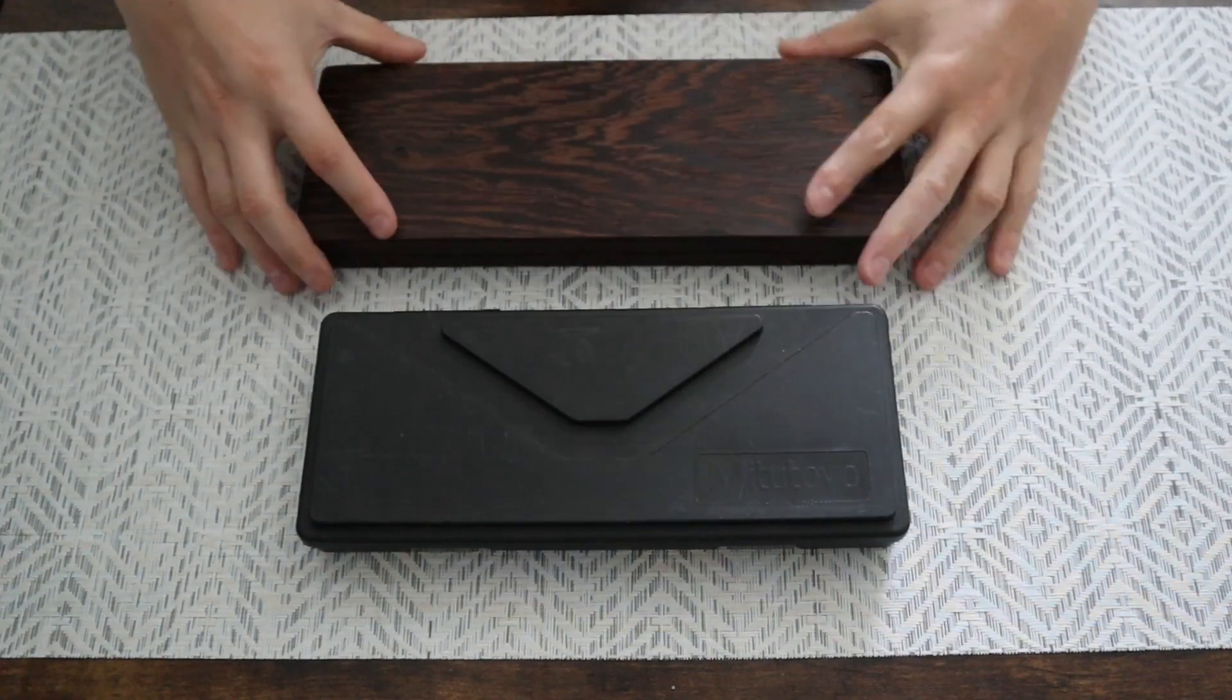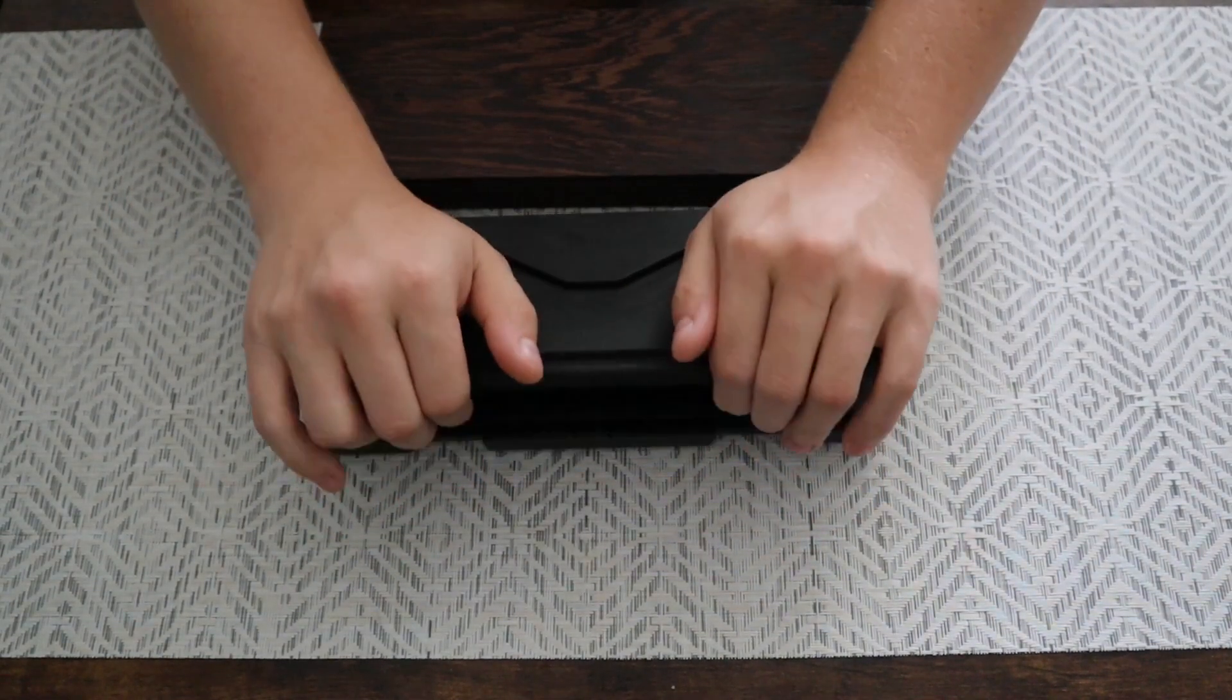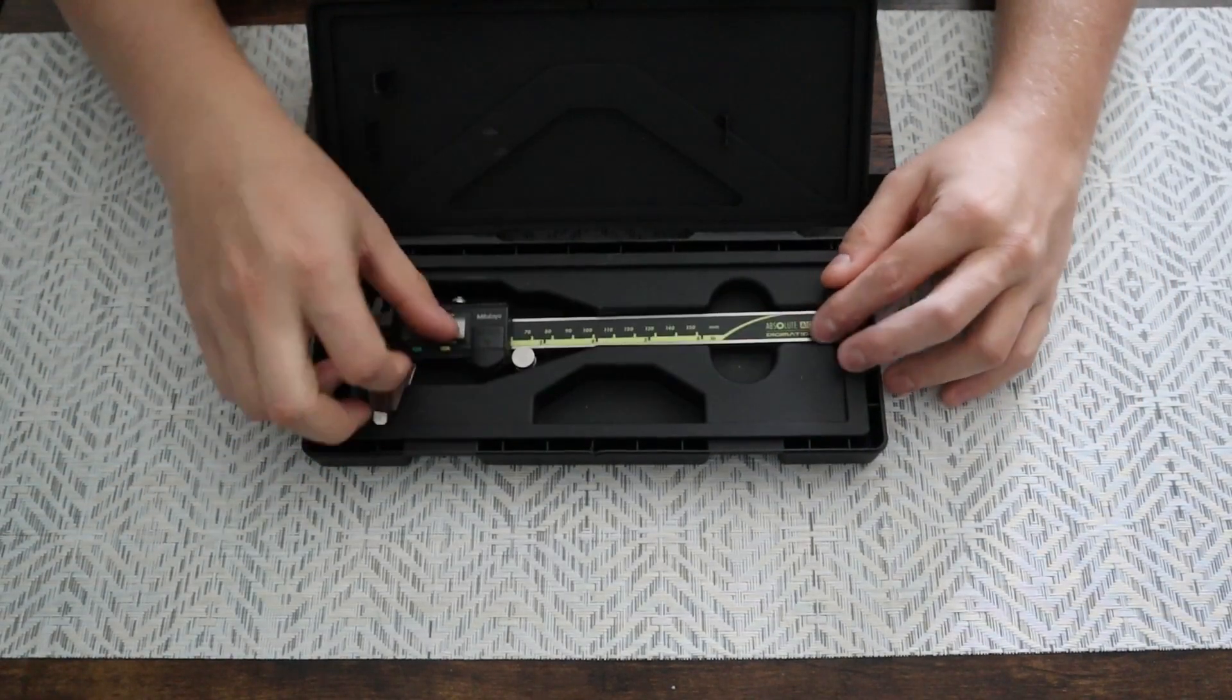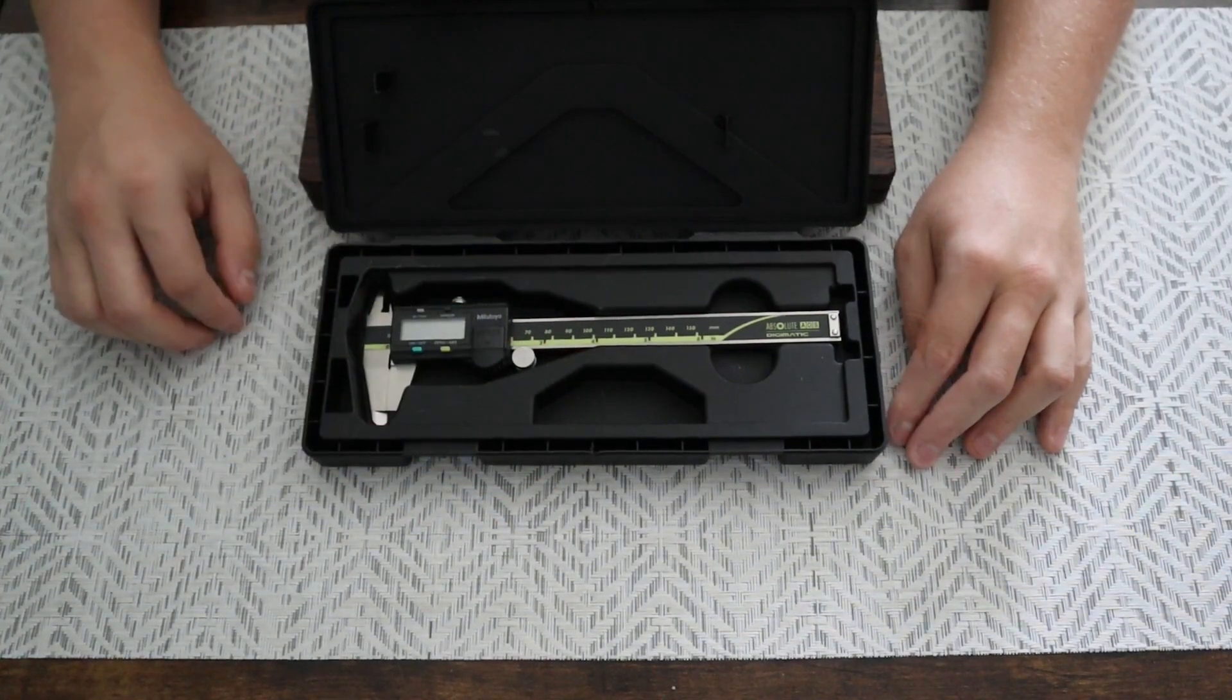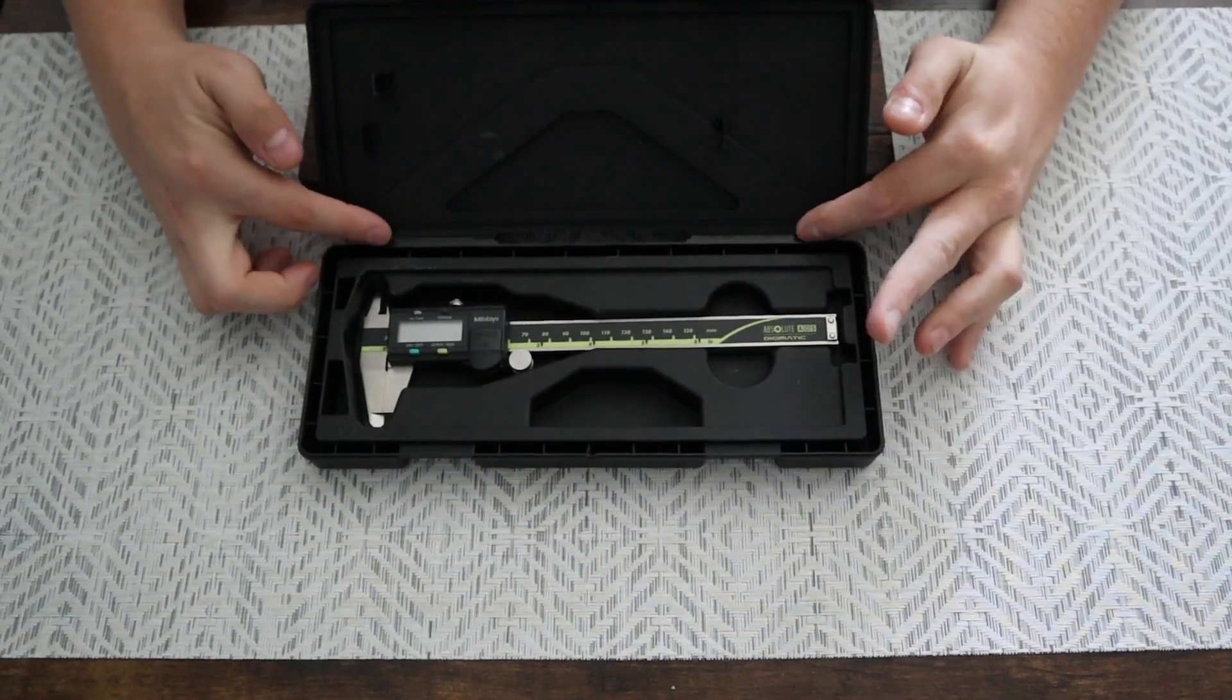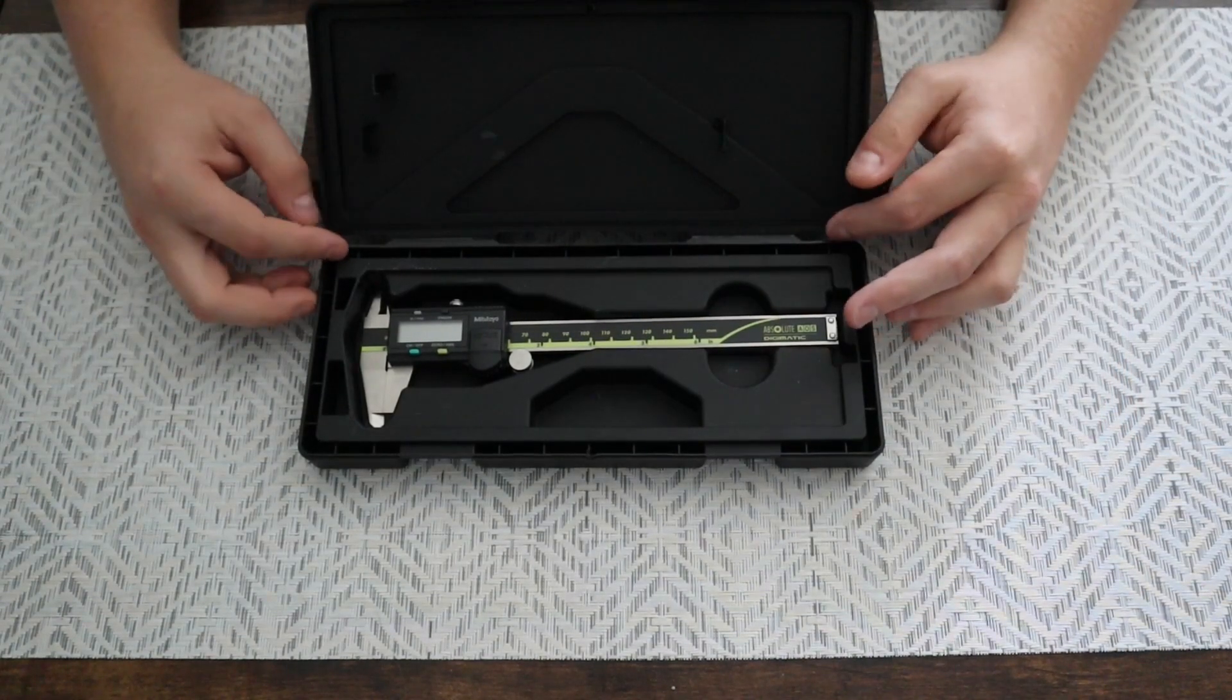Let's talk about it a little bit. This is the default case for Mitotoyo calipers, for six inch calipers. It's nothing to write home about. Holds your calipers, it'll hold a depth gauge here, and it'll hold a spare battery, and that's about it. It's plastic. These hinges tend to break pretty frequently, especially when you're traveling and they're getting beat up and stuff. Just not a great travel case.